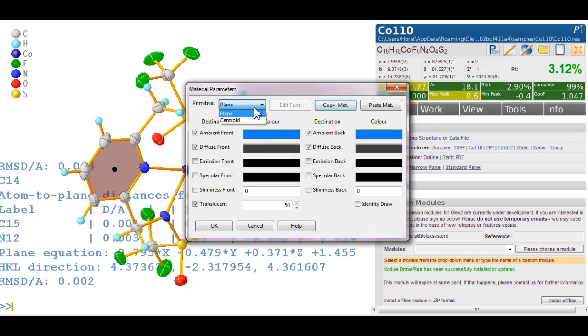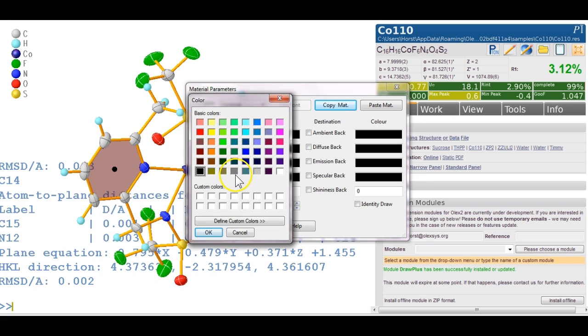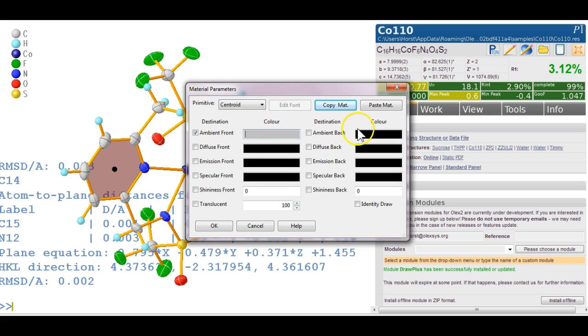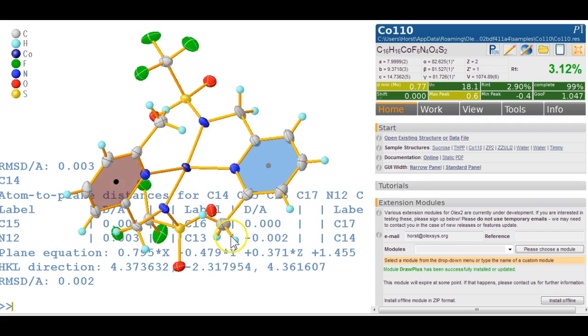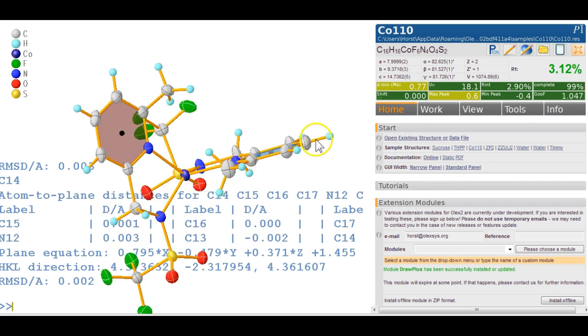Now I want to change the centroid as well just to make this look a little bit less dire. So we go and make it gray. Now we only need the front because the back is inside the spheres and we never see that. If I click OK here, then you see the plane looks very different.